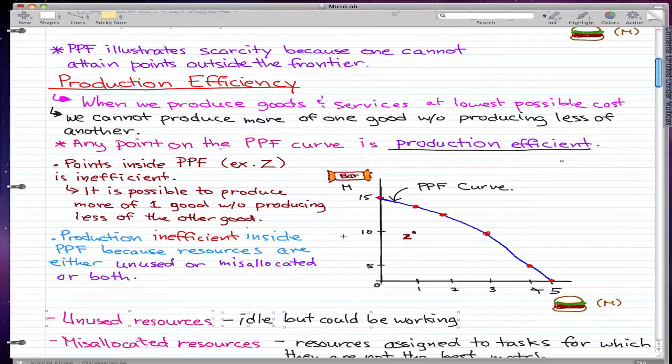And only when we produce on the PPF curve do we incur the lowest possible cost. When we're actually on the curve, that is when we're producing at the lowest possible cost.